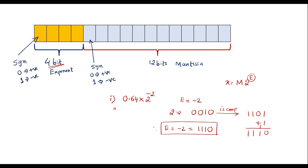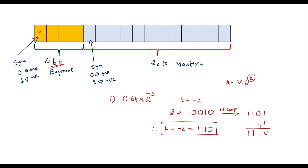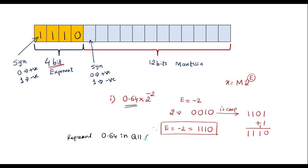So the exponent part of the floating point number is 1110. Now we need to represent the mantissa m = 0.64 in terms of 12 bits. With one sign bit, we have 11 remaining bits, so we need to represent 0.64 in Q11 format.